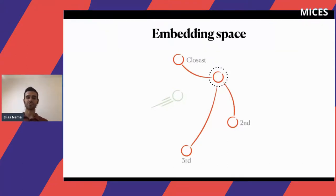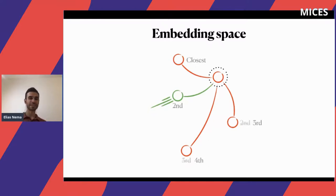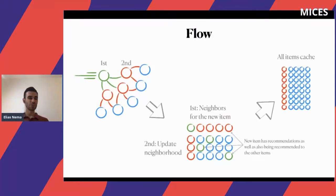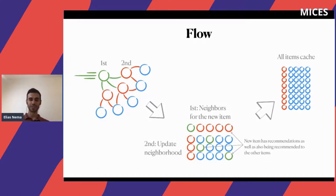But when this new item entered the space, it actually changed the space. Looking at the previous items without the new item, the closest one was the top-left one, then the second and third. But now the new item becomes the second closest to the existing item, pushing the second to third and the third to fourth. So this space constantly changes, and we need a smart way to adapt. On a high level, we get the new item and calculate the closest neighbors.